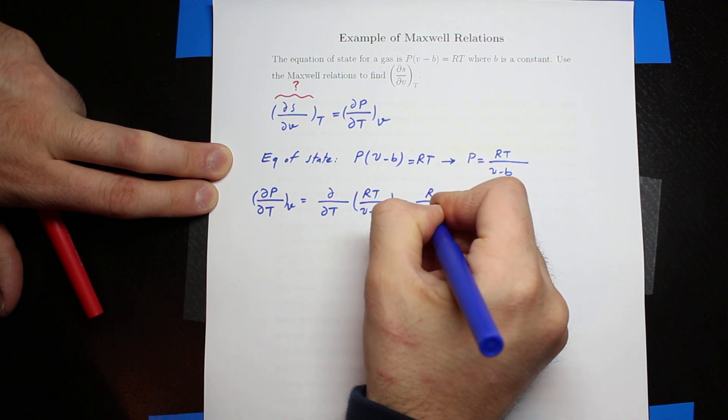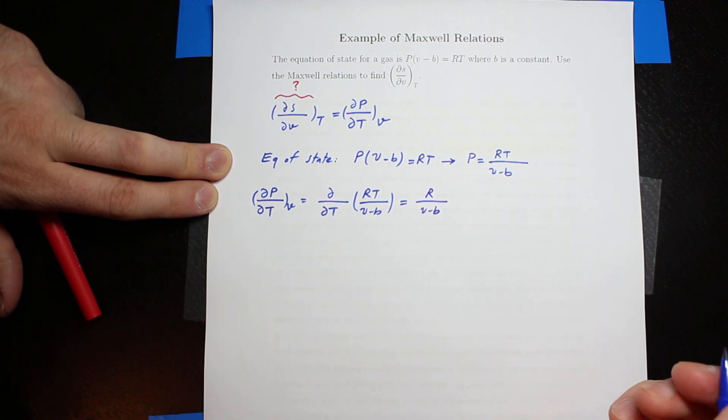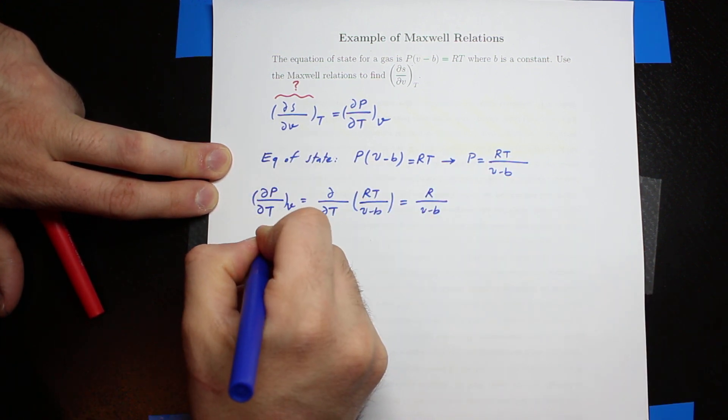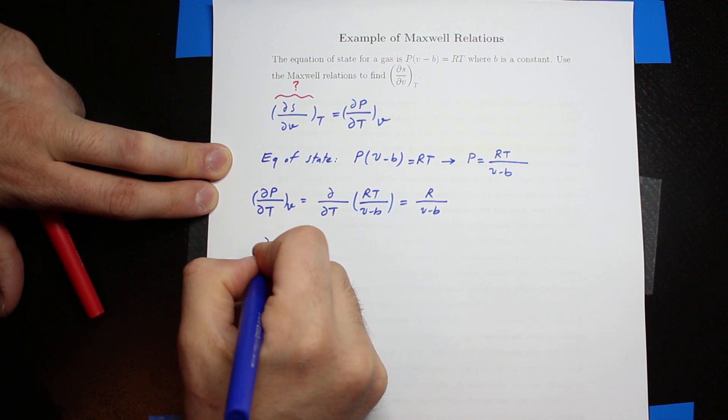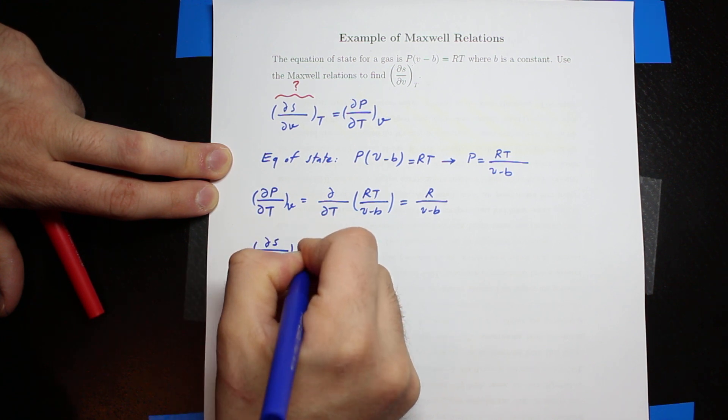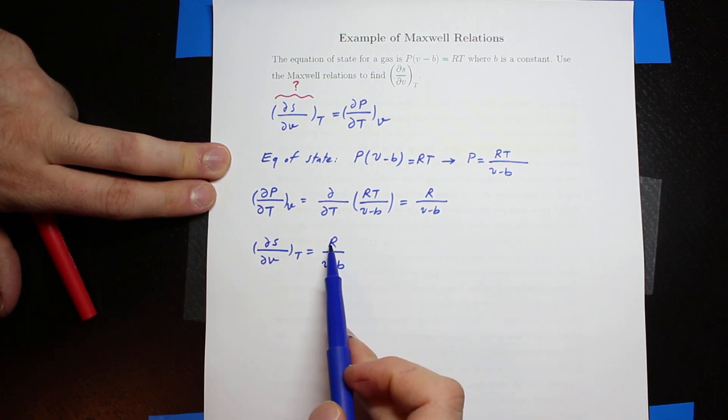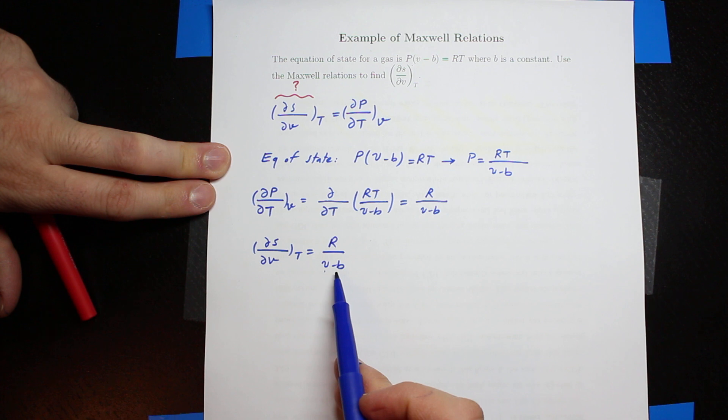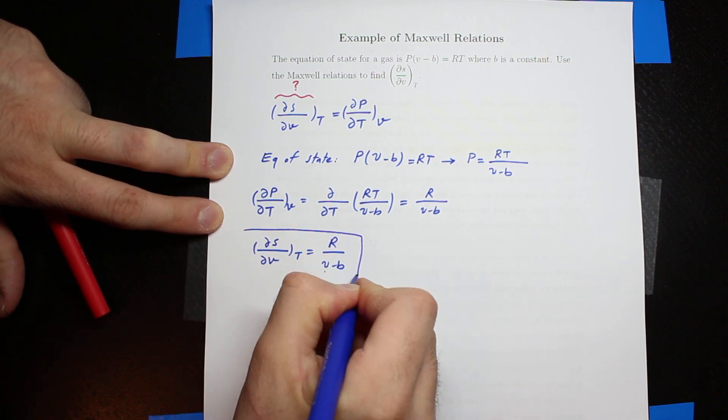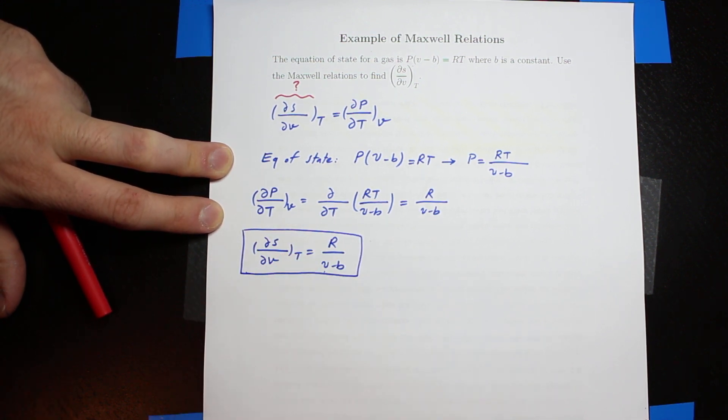That will be R/(V-B). So that means the left-hand side that the question is asking for is R/(V-B). Once again, R is a gas constant, V is the specific volume, and B is a constant. So this is the answer to this question.